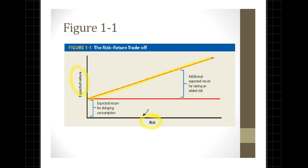The horizontal axis represents the risk taken and the vertical axis represents the expected returns. As one can see, even when we have 0% risk there must be an expected return for delaying consumption — that explains the y-intercept. Afterwards, as risk increases, additional expected return must be paid to the investor to compensate for their risk taking. That figure briefly describes this risk-return trade-off.